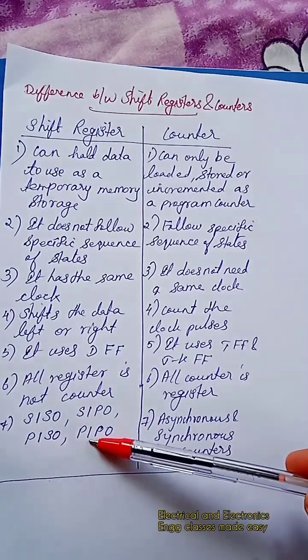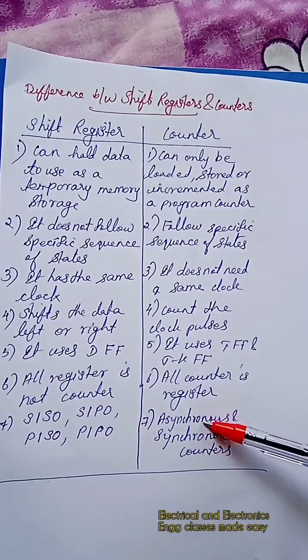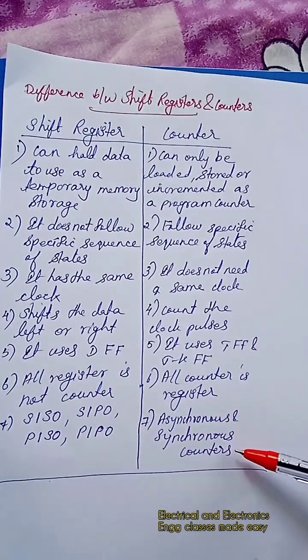Types of shift registers are serial in serial out, serial in parallel out, parallel in serial out, and parallel in parallel out. Types of counters are asynchronous and synchronous counters.